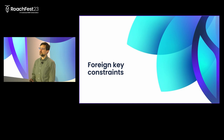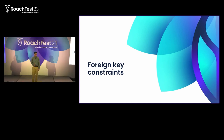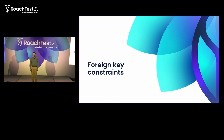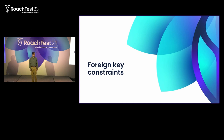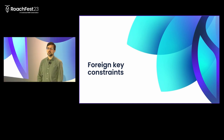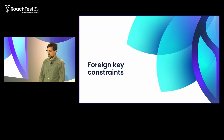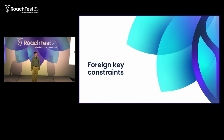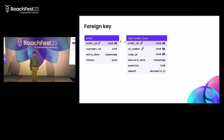So what does this have to do with databases? We have a feature in relational databases that I think serves a very similar role to the brown M&M rule, and that feature is foreign key constraints. I'm going to give you a little refresher on what exactly foreign key constraints are and then how they relate to the brown M&M problem.